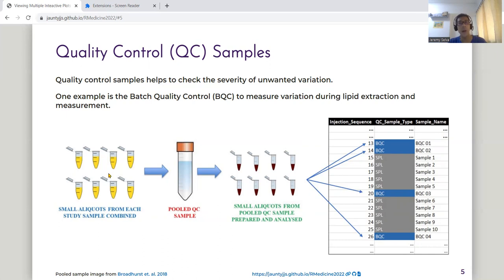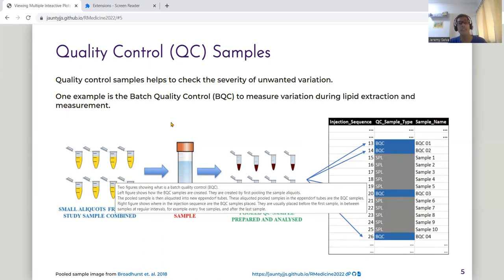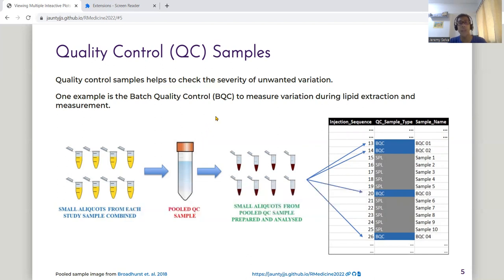It is created by creating small aliquots of study samples and pooling them together. The pooled samples are then re-allocated back into new eppendorf tubes.